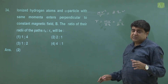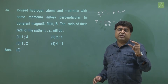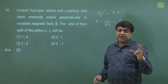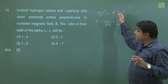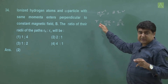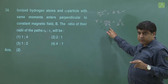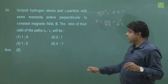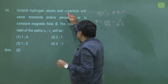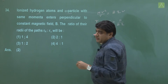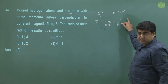Friends, we all know that when a charged particle moves in a magnetic field, the formula is mv² / r = Bqv, so the radius of the particle is mv / Bq. Here, one is an ionized hydrogen and one is an alpha particle. It is given that the momentum is the same in both cases.